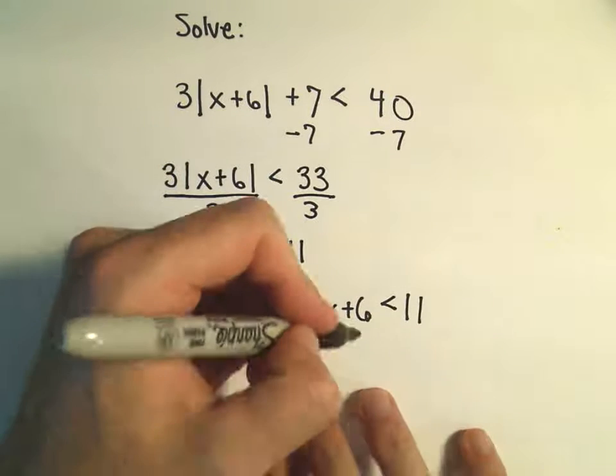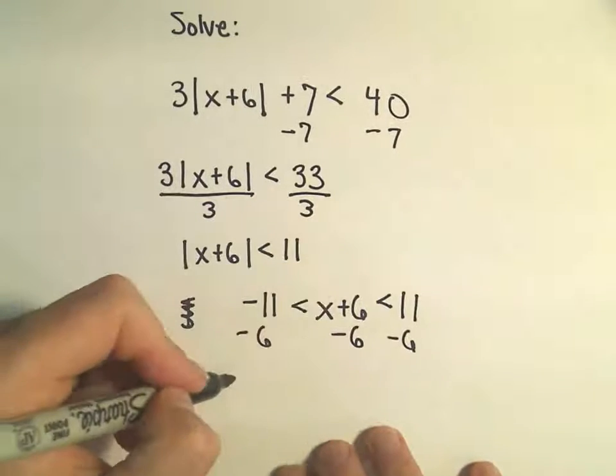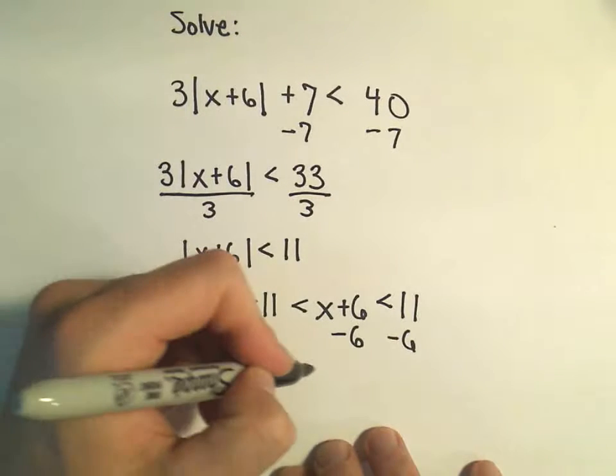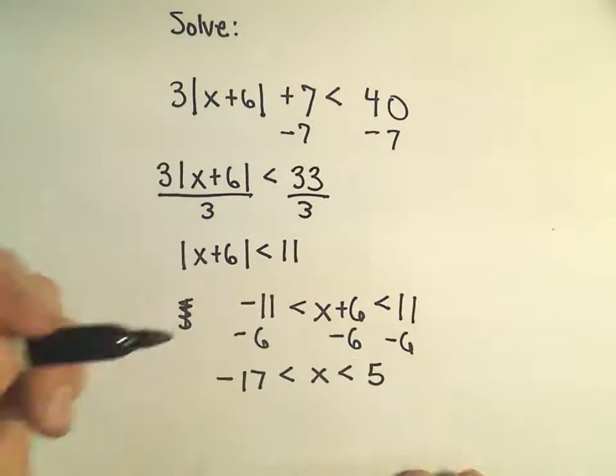So again, to solve this compound inequality, I'm just going to subtract 6 everywhere. That's going to give me negative 17 is less than x. 11 minus 6 is positive 5.